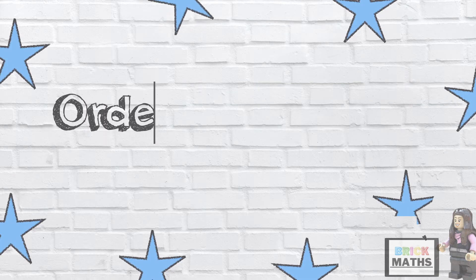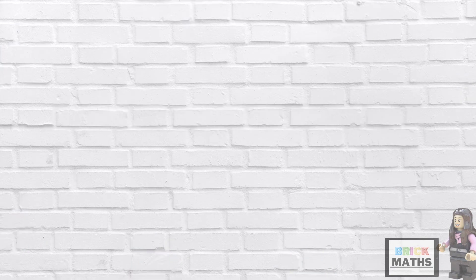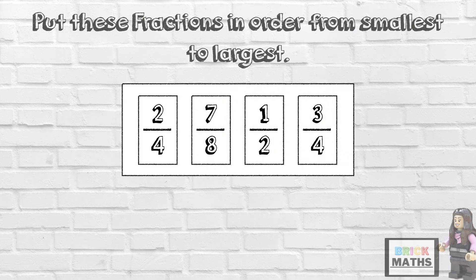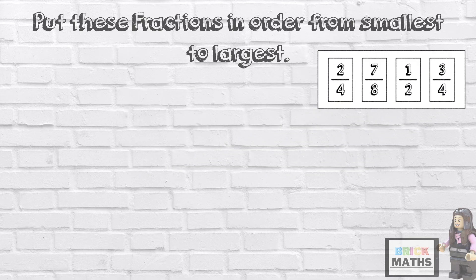So now we're going to learn how to order fractions that have different denominators. We're going to put these fractions in order from smallest to largest. To do this, we need to find a common denominator, which will be a multiple of all of these denominators. All of these denominators can be multiplied to make 8, so 8 is the common denominator. Let's find an equivalent fraction for each of these fractions with 8 as the denominator.